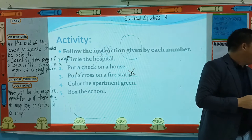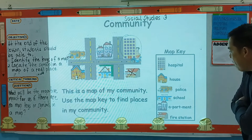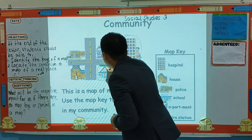Our last instruction - box the school. So where is the school here? I will look at the map key. The school - where is the school here? This is the school. So what will I do? Box the school. Did you follow? Very good.